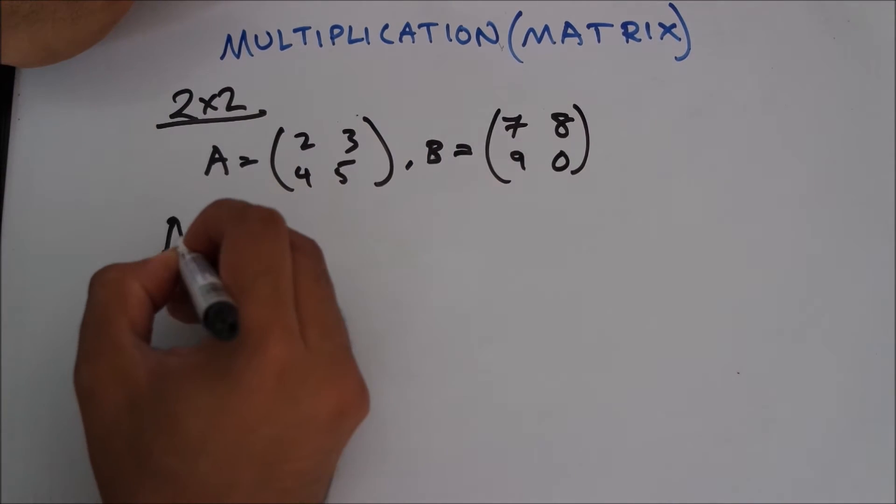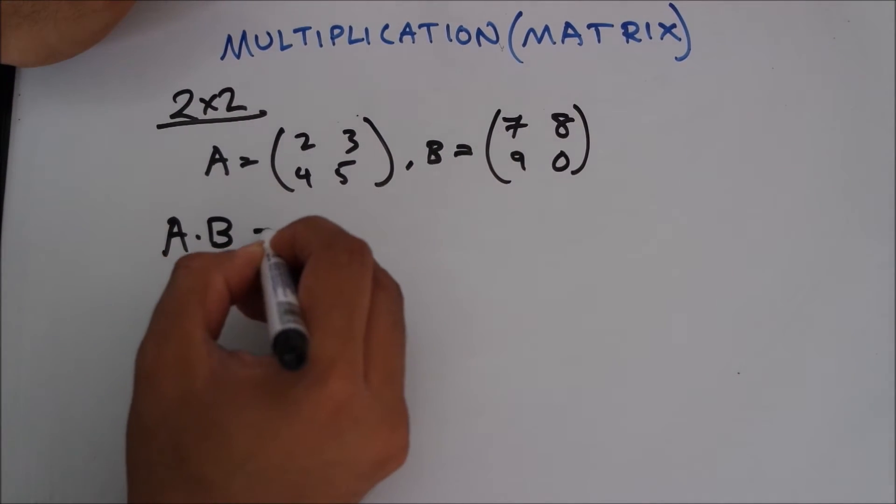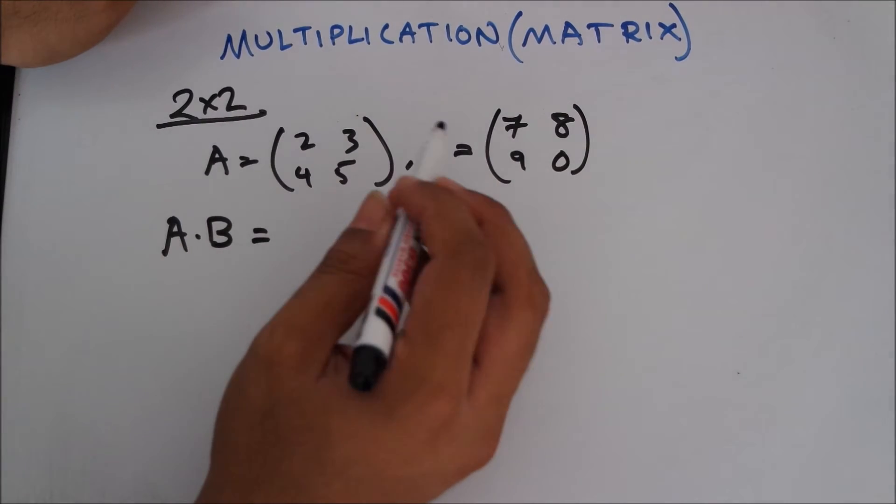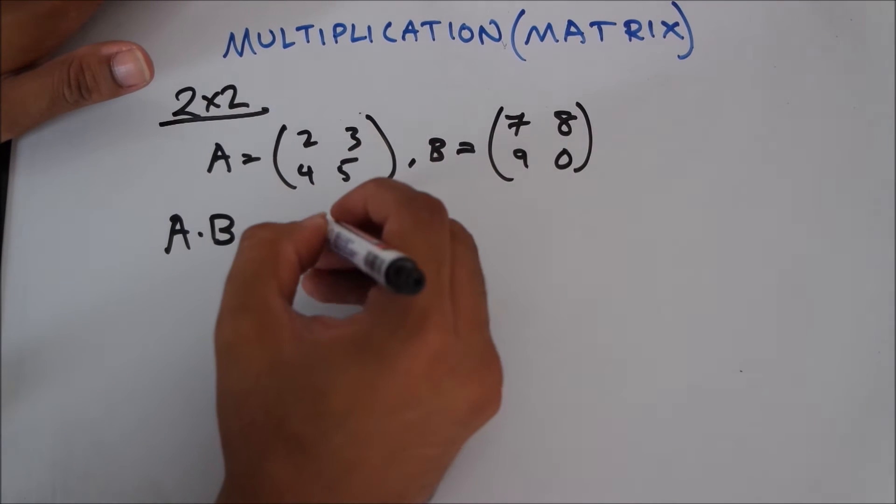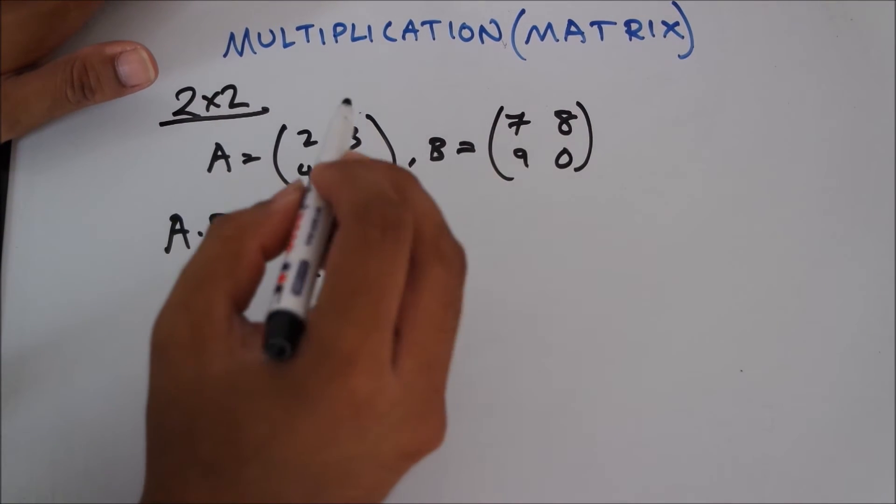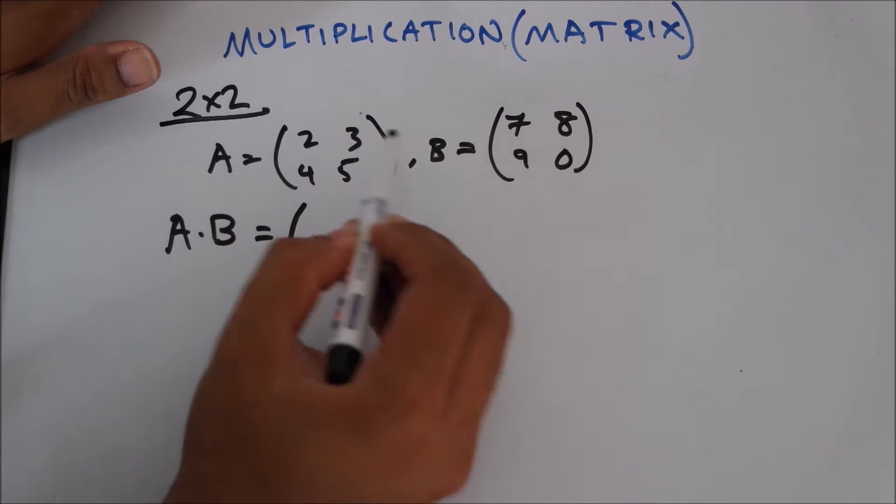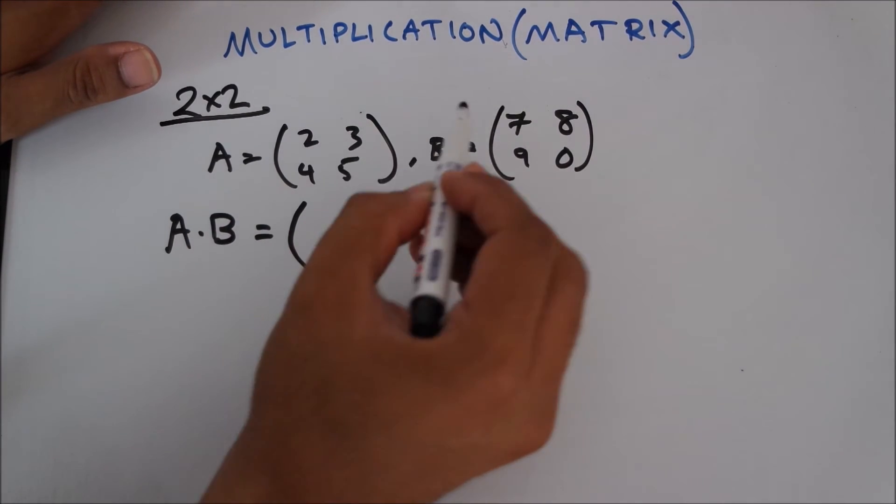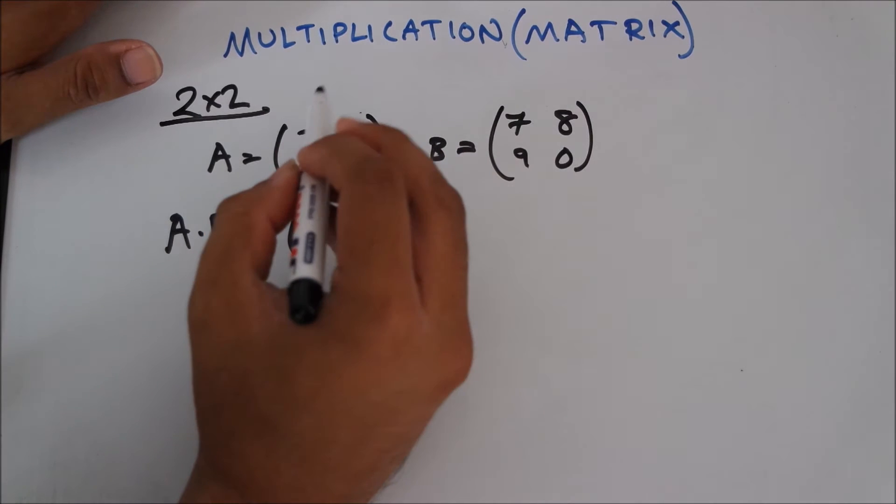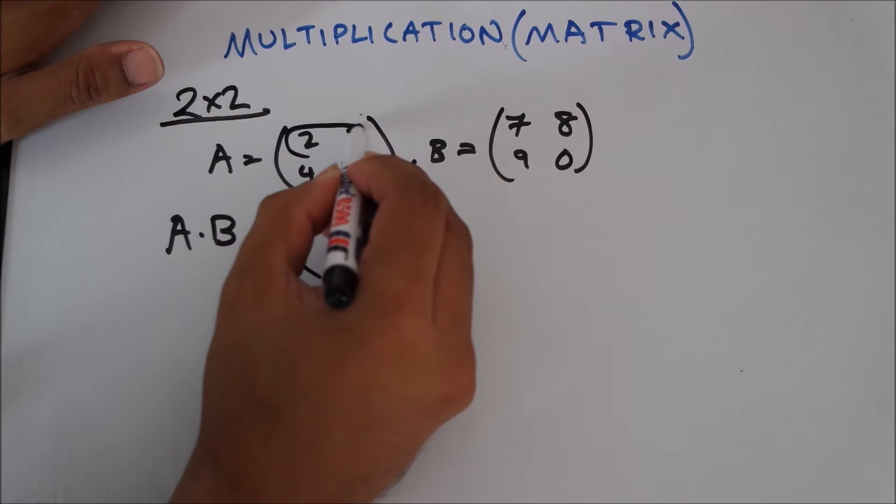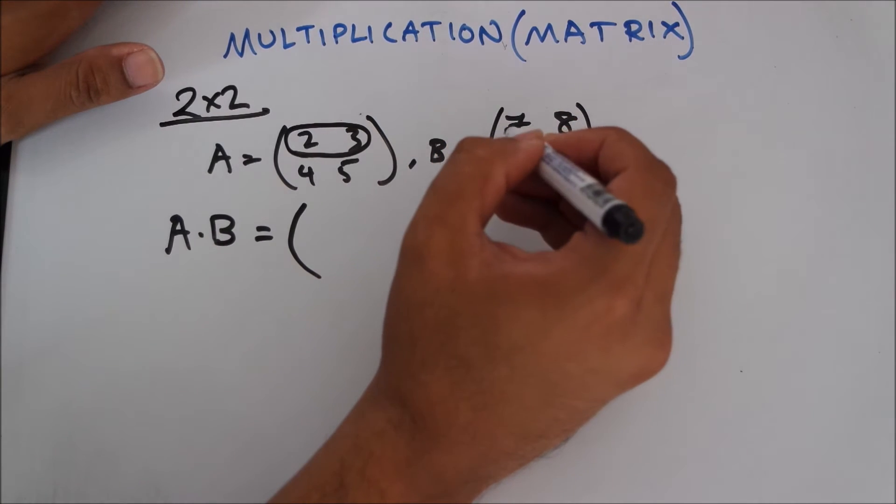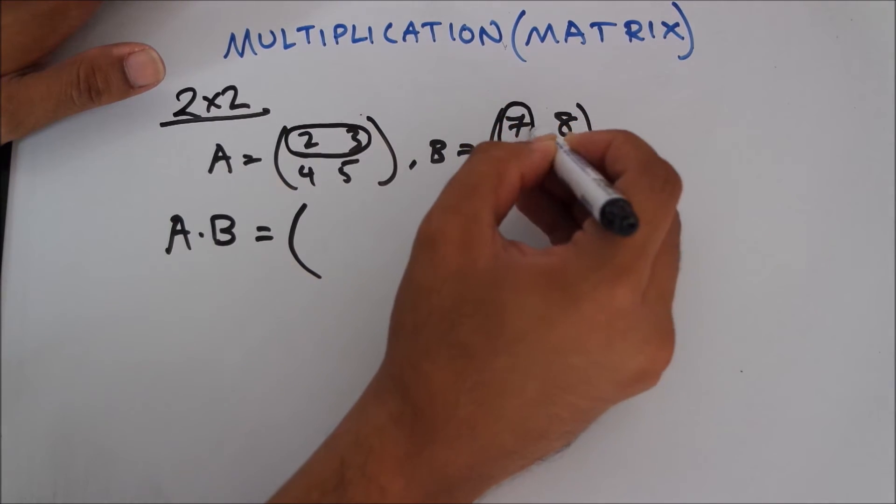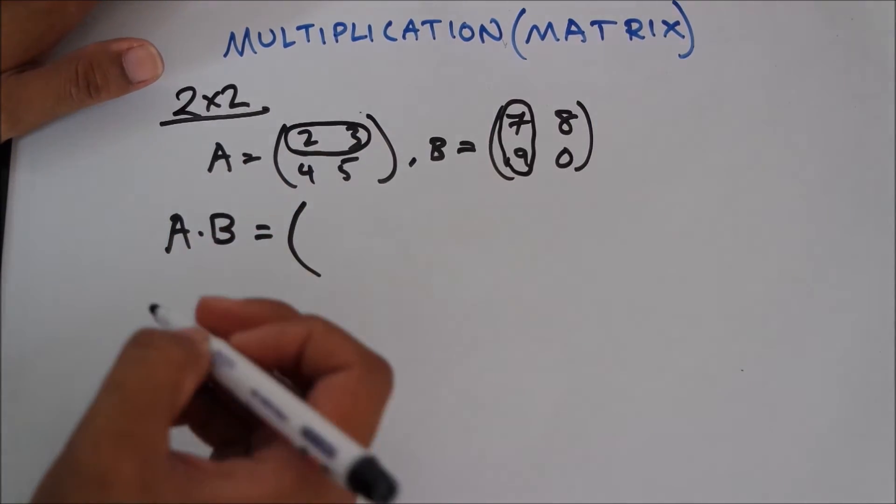So now you are asked to multiply matrix A into matrix B. What you do is, you go by row of the first one into column of the second one. You start off with this row, 2 and 3, and on the second matrix, that is B, you start off with this column. So I'll show you how to multiply this.